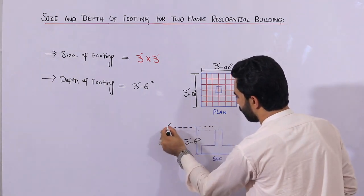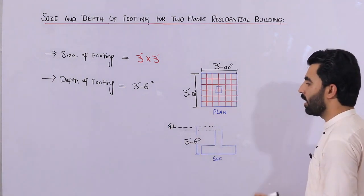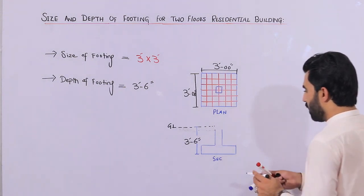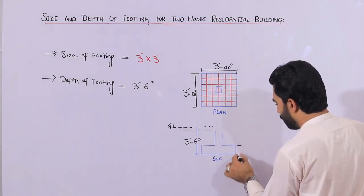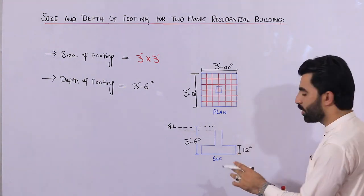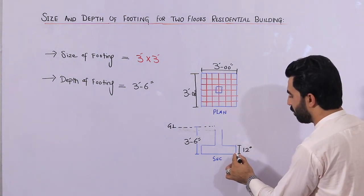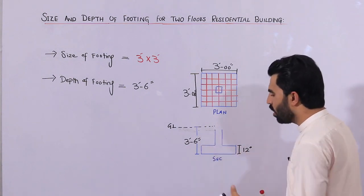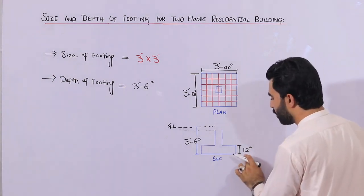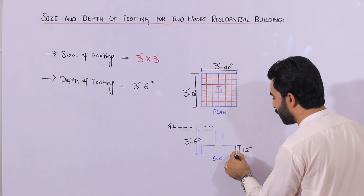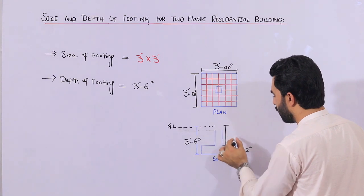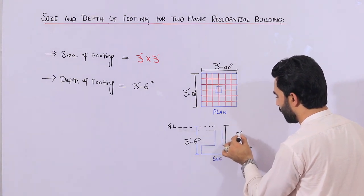Here this is GL — ground level — or NSL, natural surface level, or natural soil level. Next, here is the bit, so the bit depth should not be less than 12 inches, with concrete cover of three inches at the bottom, three at the top, and three from all sides. So we will use a three-inch concrete cover. After the depth of the bit, to the ground level you can keep two feet and six inches.